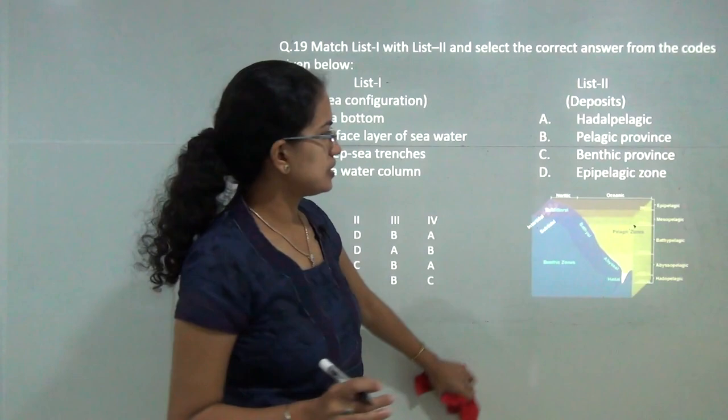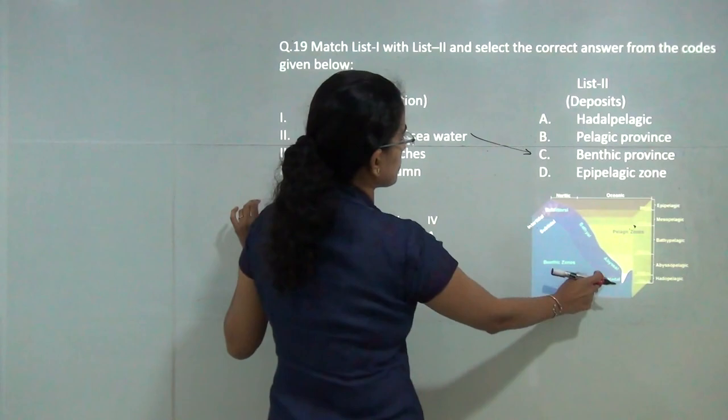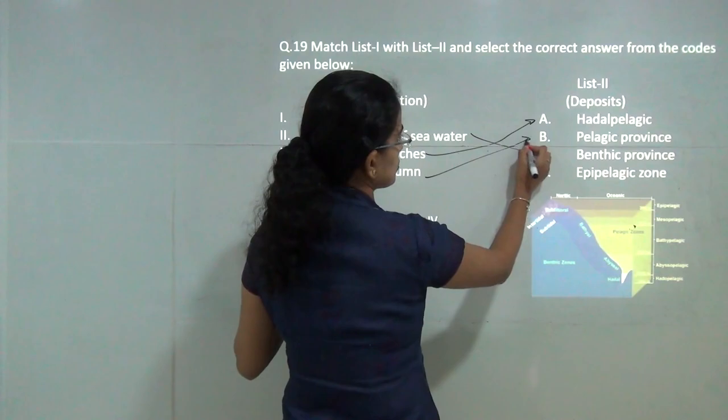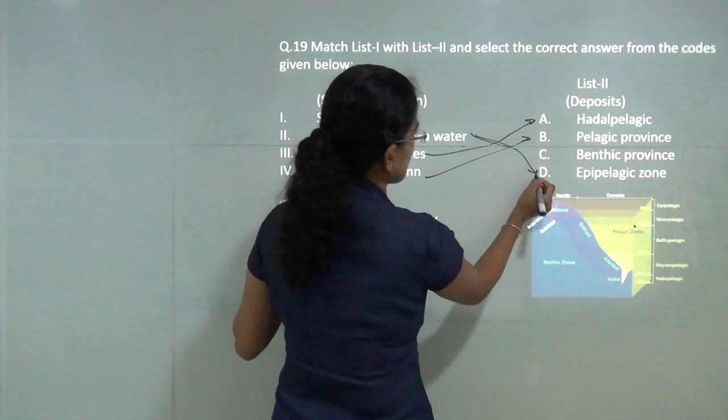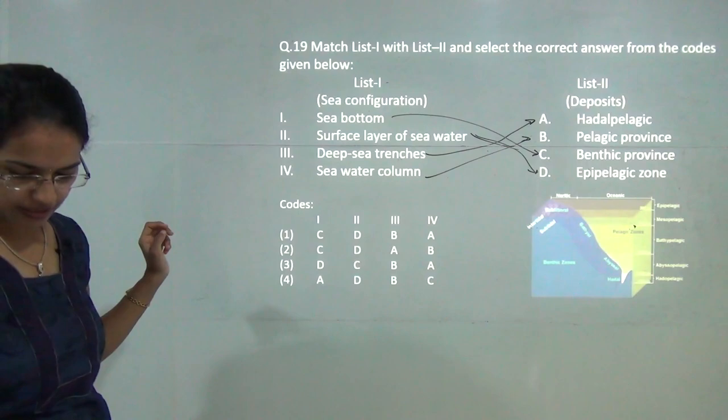Next is what are the various ocean layers known as? As you can see in the diagram, the uppermost layer, the surface layer is known as the epipelagic layer. Then you have the deep sea trenches which are known as hadal pelagic. This whole zone, the water column is known as the pelagic zone. The surface layer is known as the epipelagic, this would be D, and finally sea bottom is the base which is the benthic zone. This would be C. This would be the correct answer for question 19.